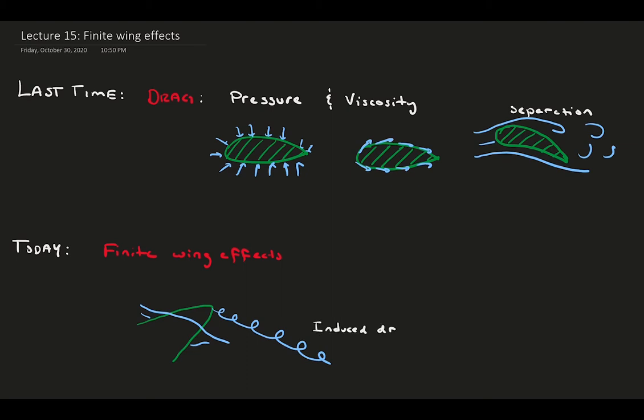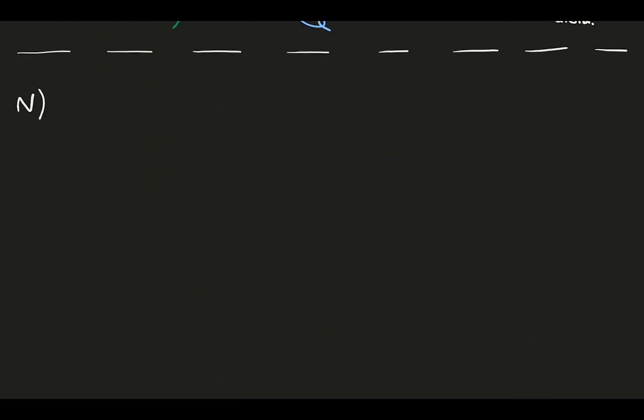We will explore induced drag, effective angle of attack, and downwash, as well as build tools with the Biot-Savart law to explain the impact of the vortex near the foil. Let's jump in.